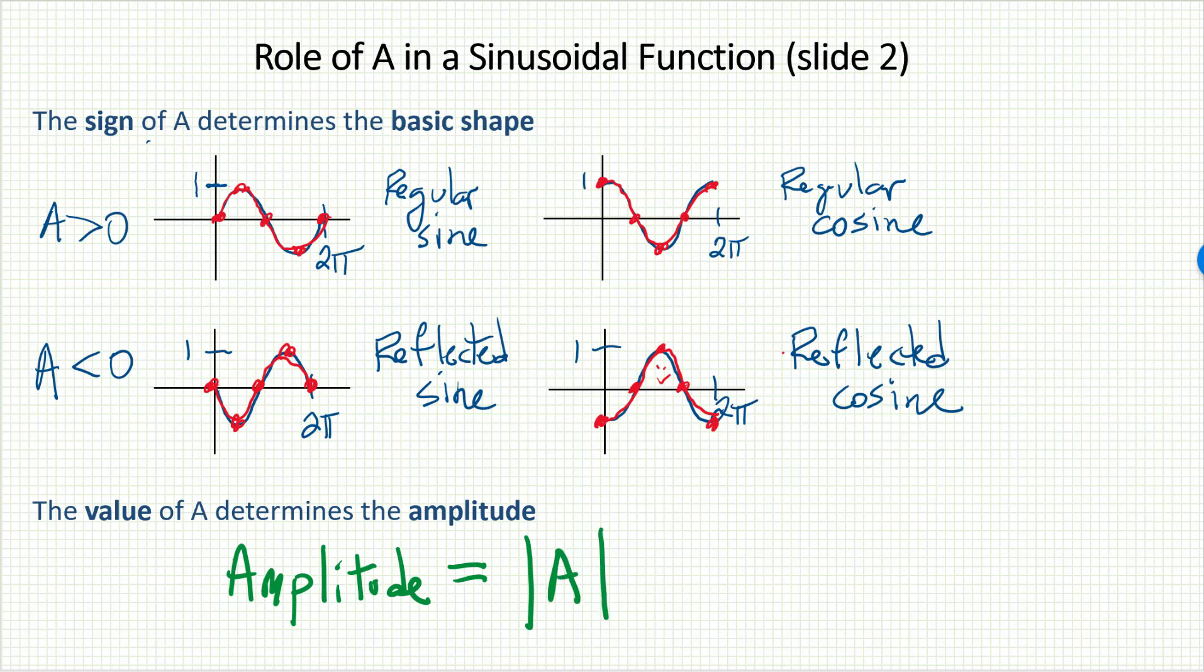Based on our examples, we know that the value portion of the a tells you the amplitude. The way we write that in math is using those absolute value bars. We're not talking about the positive or negative. We already know what that determines. That has to do with the basic shape. We're talking about just the value portion.